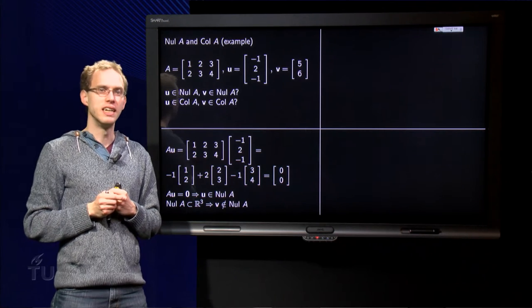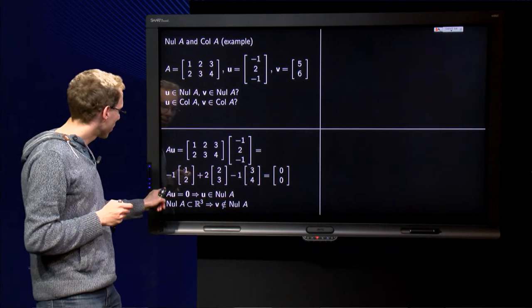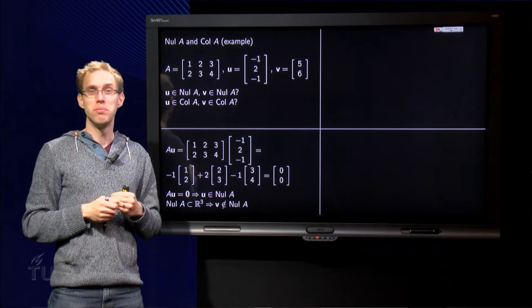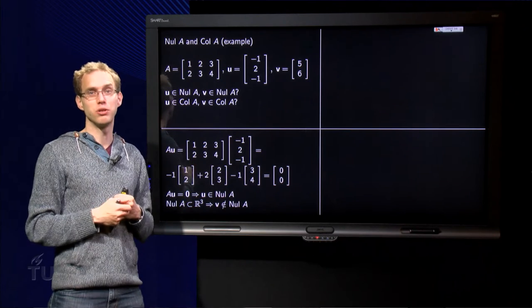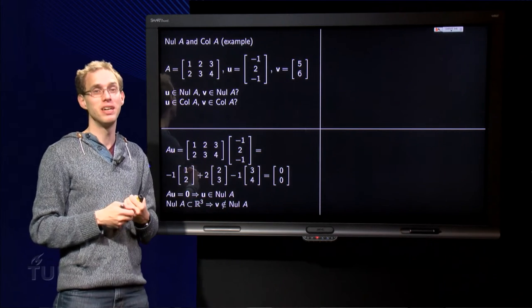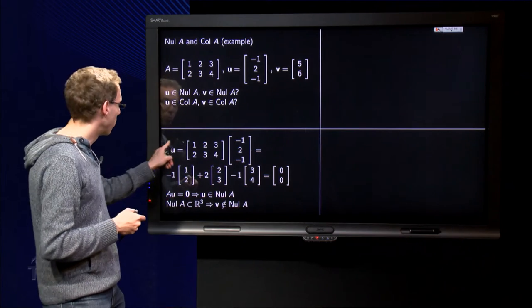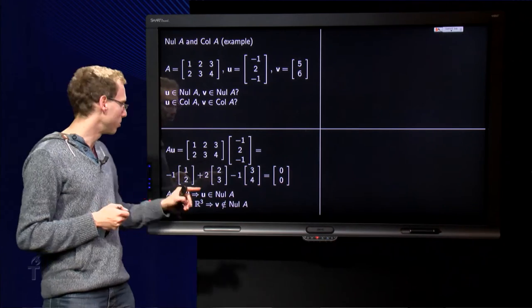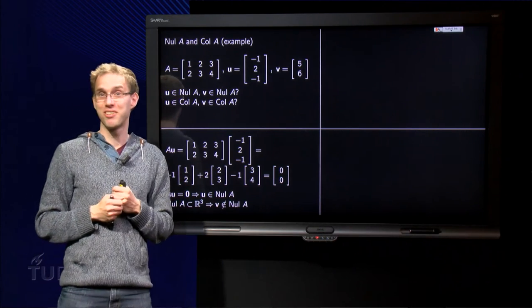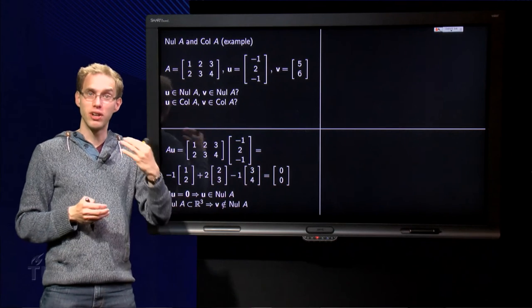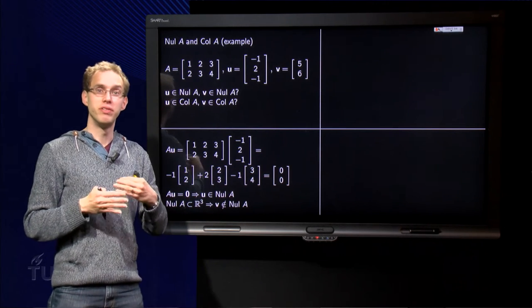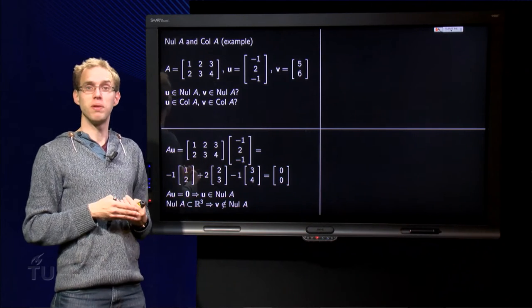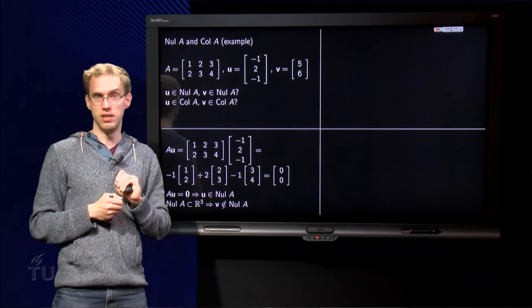What about v? Well, the null space of A is a subset of R^3, because if I want to have a vector in the null space, I have to be able to compute A times u. And since the width of A is 3, this vector needs to have 3 components, so Nul A is a subset of R^3. But v is a vector in R^2, so v cannot be in the null space of A, because it is not in R^3 in the first place. So v is not in the null space of A.